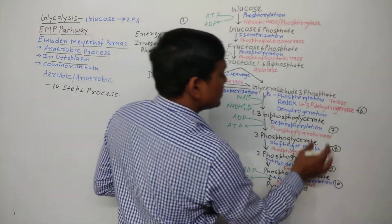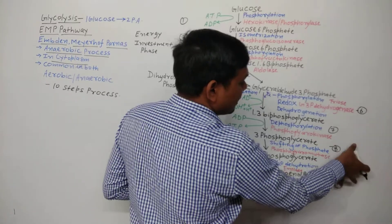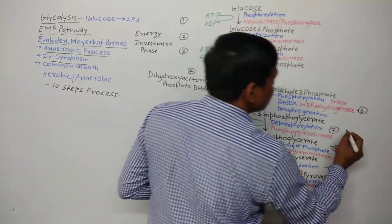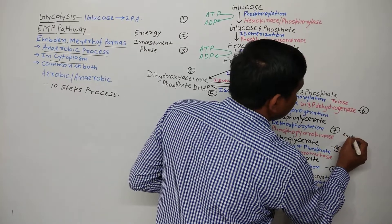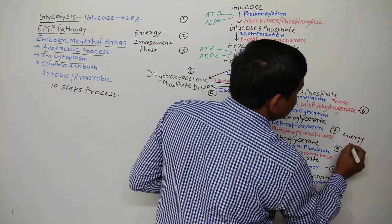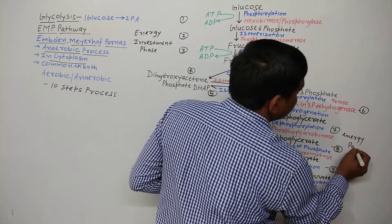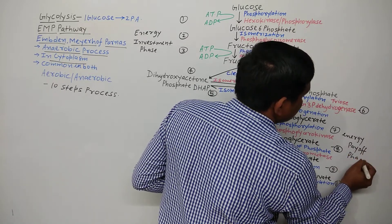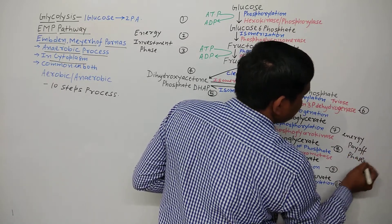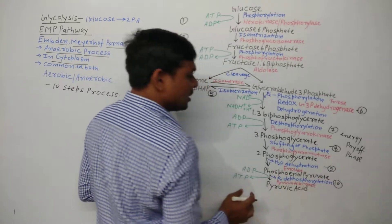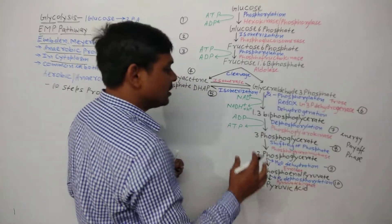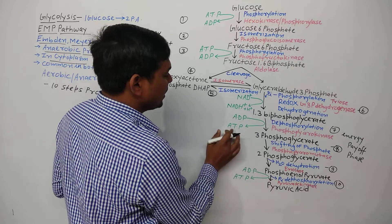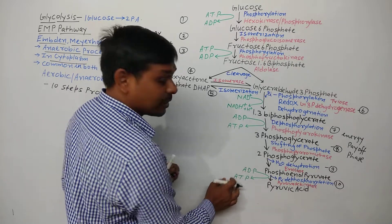This is the last five steps — the energy payoff phase. Because here ATP production is occurring: ADP is being converted to ATP.